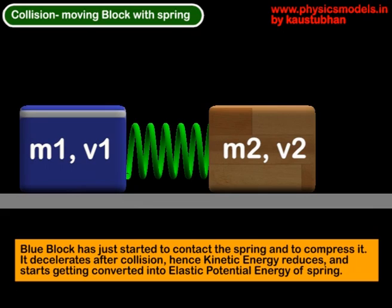To understand what is happening here, the blue box which came in at a velocity V1 and a kinetic energy half M1 V1 whole squared hit that green spring. The spring pushed back on it, so its kinetic energy reduces.